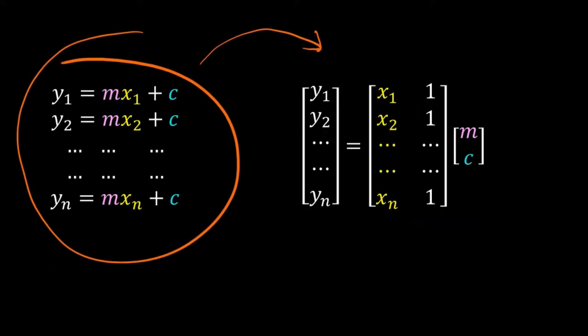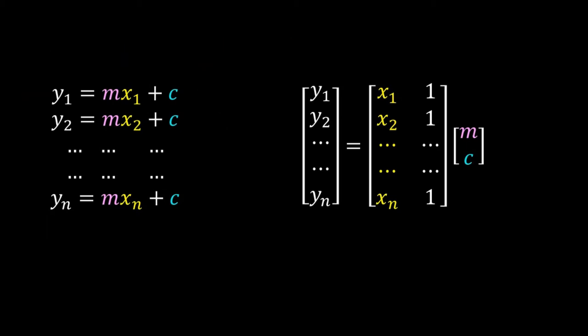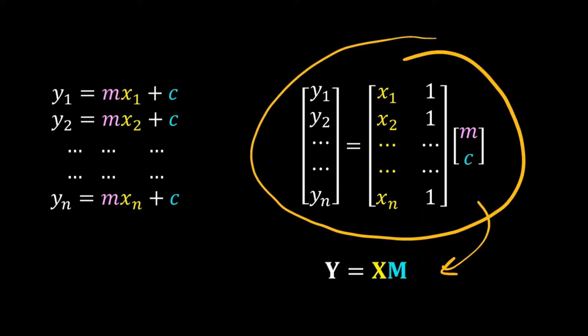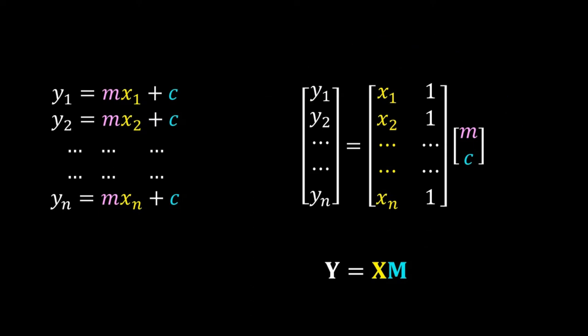We can write this system of n equations using matrices and vectors. Usually we write those using vector notation. So we have Y = X·M, where X, Y, and M are all in bold uppercase, meaning they are all vectors or matrices.